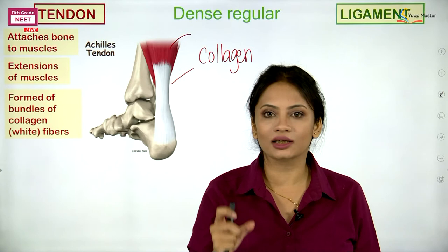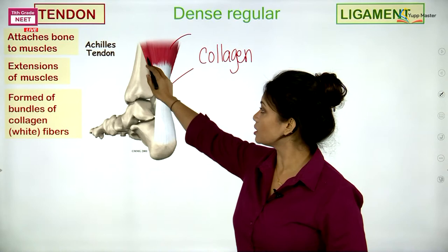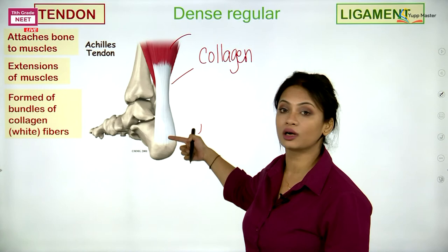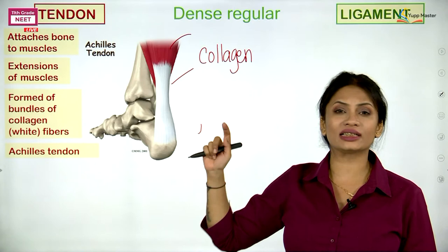Behind your heel bone, you can feel a small strip-like structure — that is your tendon. One of the strongest tendons in our body is called the Achilles tendon.